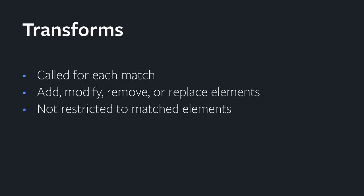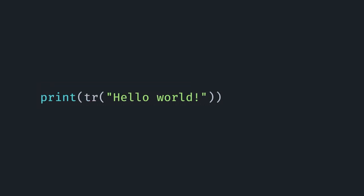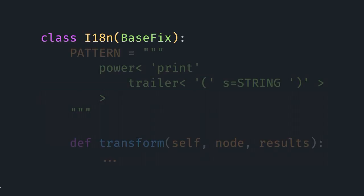Once lib2to3 finds a match in the tree, it calls the transform on our class. That transform can do any sort of modification — anything from adding new elements to the tree, removing them, replacing them, or doing in-place modifications. It's not restricted to just the matched elements; we can go anywhere up or down the tree to change things we want. The pattern match simply provides the starting point for each transformation. Going back to the code mod we originally wanted, where we take this bit of code and wrap the string literal in the translate call, we can build the fixer like this.